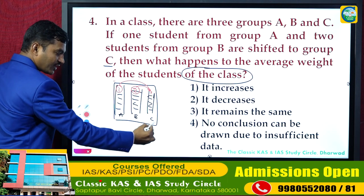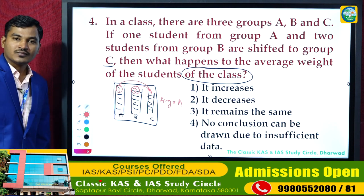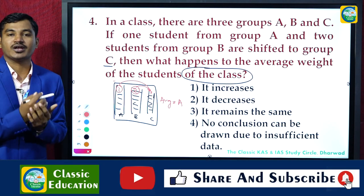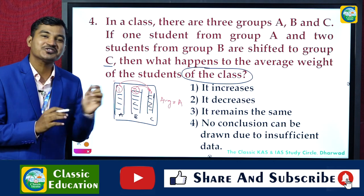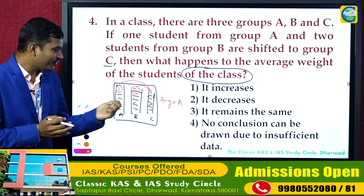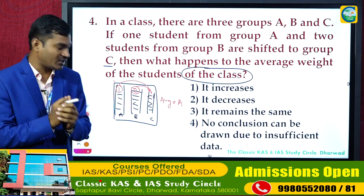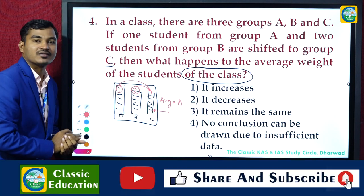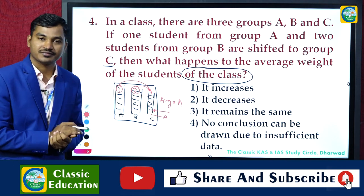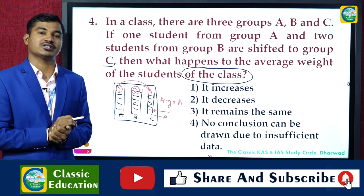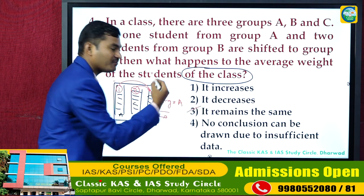Let us assume the average of this class is some value A. The question asks about shifting within the classroom. When shifting is done within the classroom, how can the average of the classroom change? The average will only change when a new member joins the class or a member leaves. So the answer is: it remains the same.